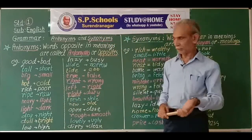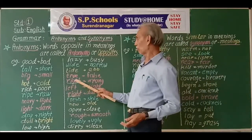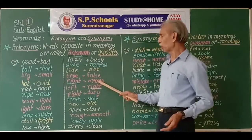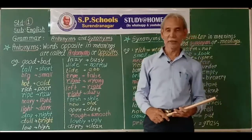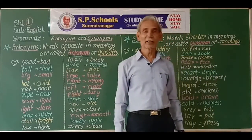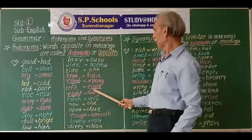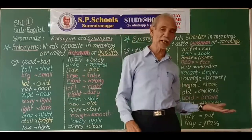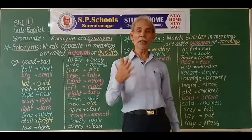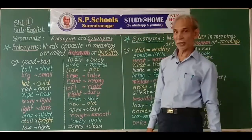True and false are antonyms. True means correct, and false means incorrect — which is not true. Right has multiple meanings: right is the opposite of wrong; right also means a side of the body — right hand, left side. Right also means duty — fundamental rights, freedom is my birthright. Right means authority and duty.